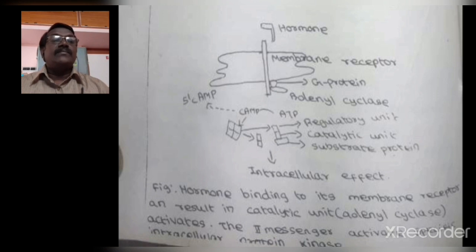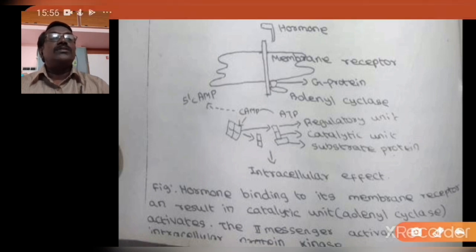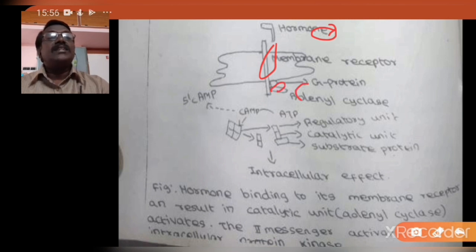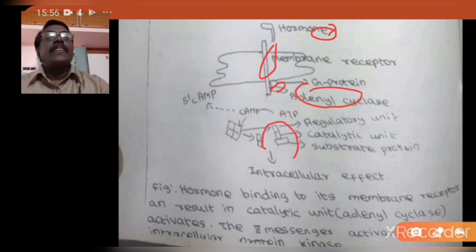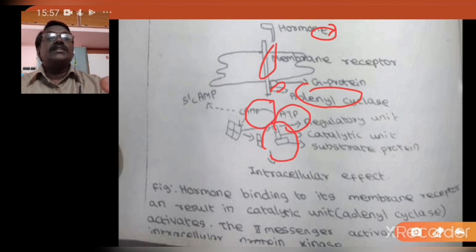This figure explains the formation of cyclic AMP: here you can see the hormone which binds on the receptor, by which the G-protein is activated and the adenyl cyclase is activated. This adenyl cyclase triggers the protein kinase enzyme; for the action of protein kinase enzyme it requires ATP, and when the ATP is used it converts into AMP. When the level of cyclic AMP increases, it involves the synthesis of new proteins, which may be enzymes.